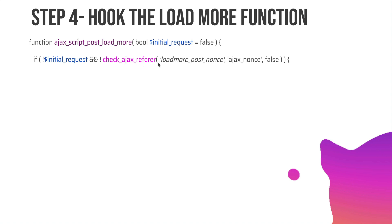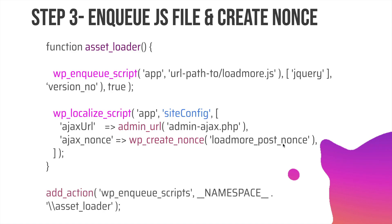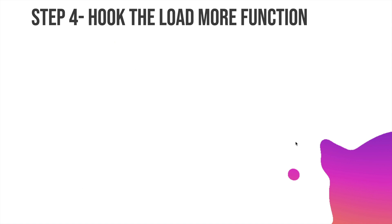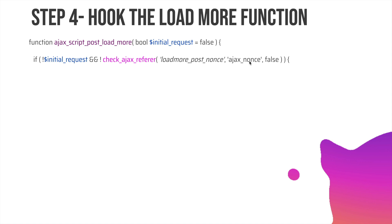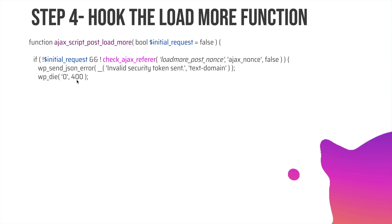If this is not an initial request, we use check_ajax_referer to verify the nonce. The first parameter is the nonce action name — this is different from the action name used when making the AJAX request; it is the action name used when creating the nonce, so it must match. The second parameter is 'ajax_nonce' and false. If the nonce is not valid, we send an error using wp_send_json_error, die using wp_die(0), and the response status will be 400.